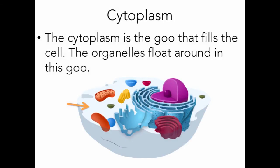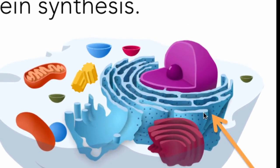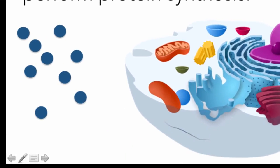Ribosomes make proteins. Ribosomes look like little dots. Another way of saying this is that ribosomes perform protein synthesis — 'synthesize' means to make something. For example, Santa's elves synthesize toys, and a ribosome synthesizes proteins. You can find ribosomes all over a cell: some float around freely, and others are attached to a membrane known as the endoplasmic reticulum. The little dots on the endoplasmic reticulum are ribosomes.